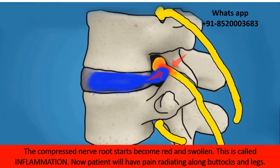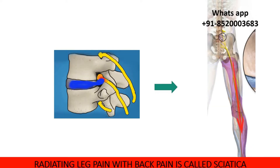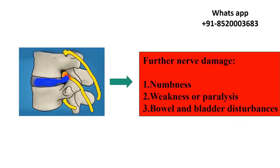Now the patient will have pain radiating along the buttocks and legs. This radiating pain along with back pain is called sciatica. Further damage causes numbness, weakness or paralysis, and bowel and bladder disturbances.